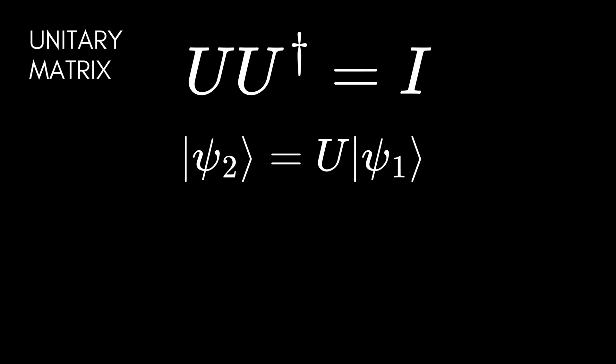Because a quantum gate is represented by a unitary matrix, the unitary matrix changes the state of the quantum system from psi-1 to psi-2. So if psi-1 is the input to the quantum gate represented by unitary matrix U, the output of this circuit will be psi-2.